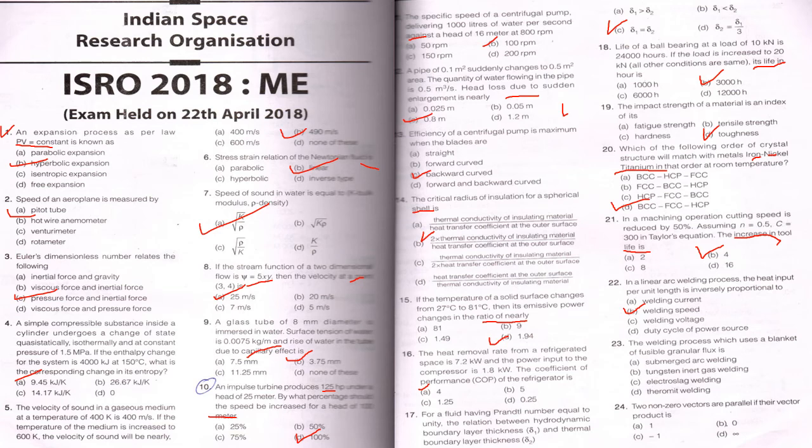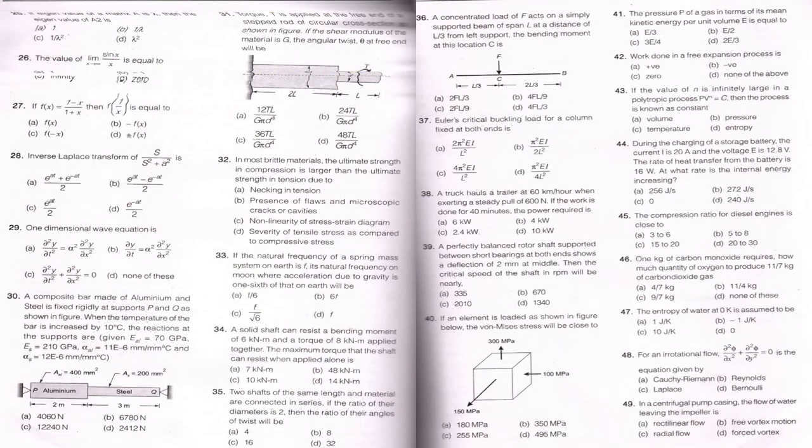The value of limit x tends to infinity sine x by x is equal to. Function f of x equal to 1 by minus x plus 1 plus x. Function of 1 by x. Laplace transform is not correct answer. One dimensional wave equation.